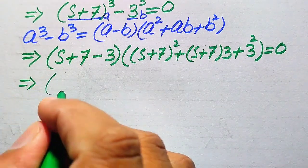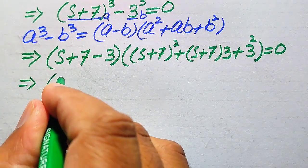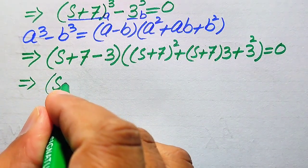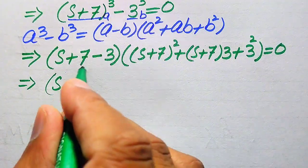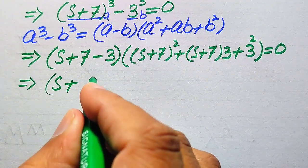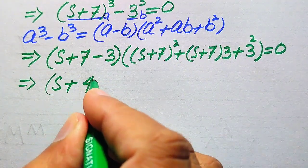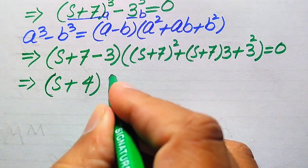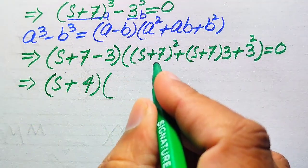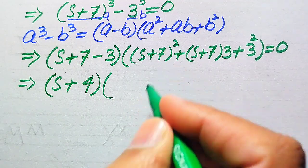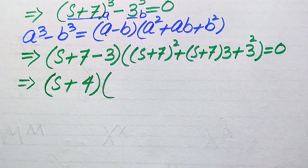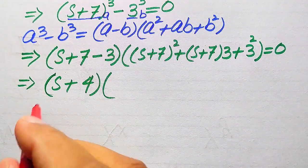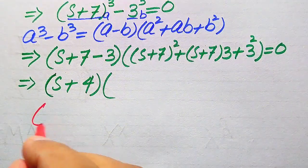We simplify by combining like terms: s + 7 − 3 becomes s + 4. So the first factor is (s + 4). Now we apply the square identity to expand (s + 7)².